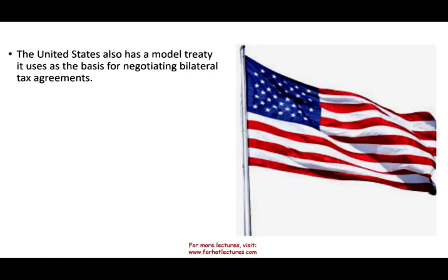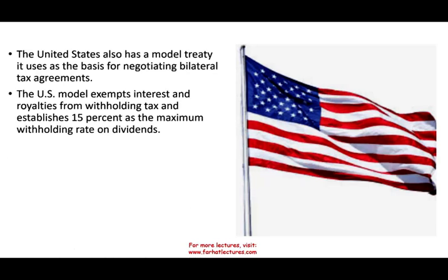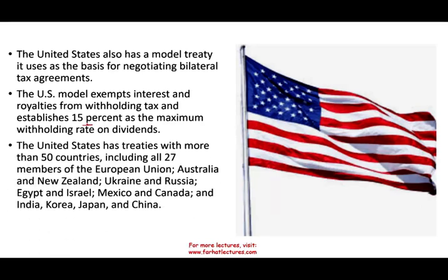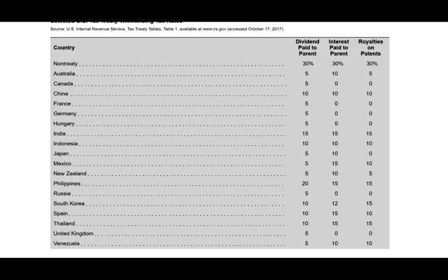The U.S. also has its own model when negotiating bilateral tax agreements. The U.S. model exempts interest and royalties from withholding and establishes a 15% maximum for withholding on dividends, though for some countries it may be higher. The U.S. has treaties with more than 50 countries, including EU countries, Australia, New Zealand, Ukraine, Russia, Egypt, Israel, Mexico, Canada, India, and so on — here is a list of the different rates.